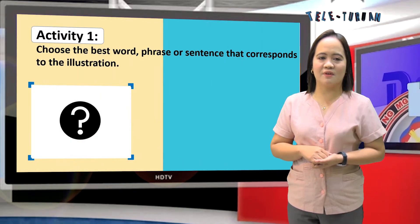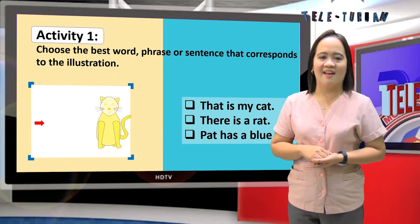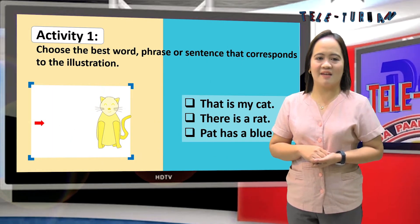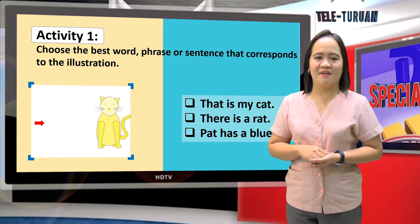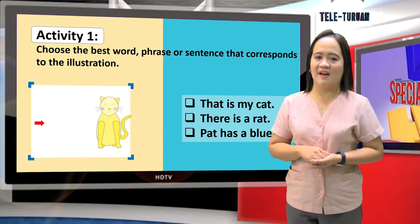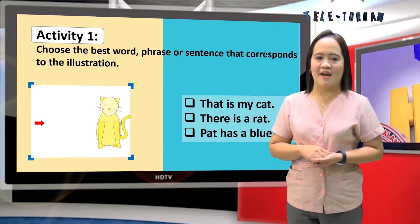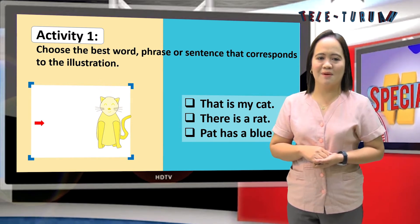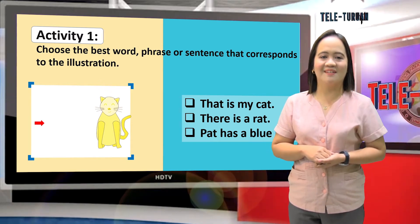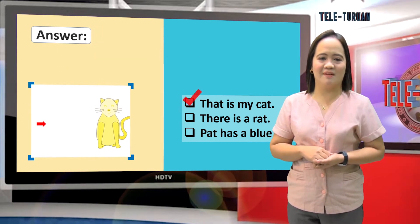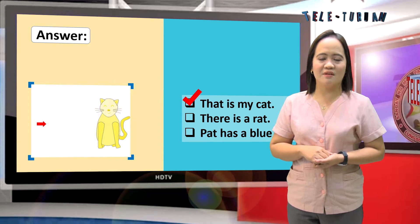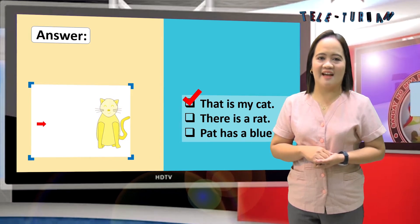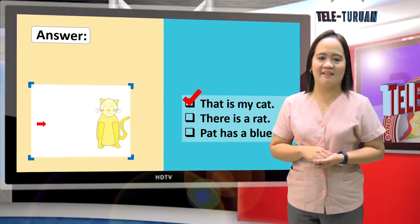Fourth illustration: that is my cat; there is a rat; Pat has a blue hat. Wow, good job. The answer is: that is my cat.